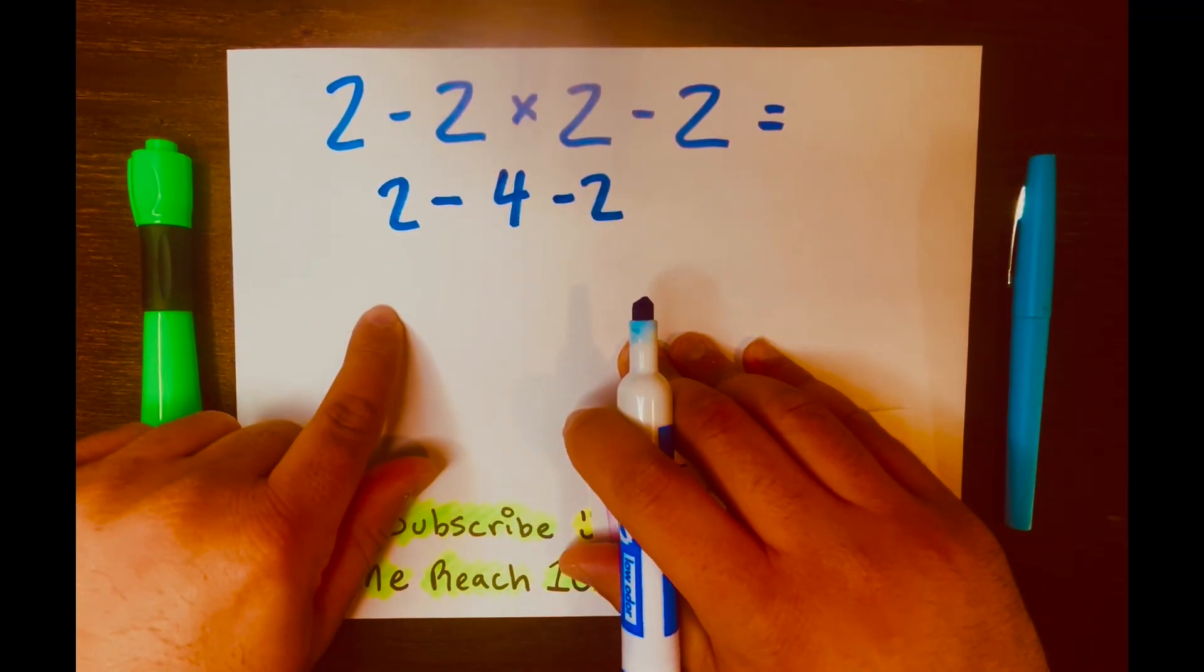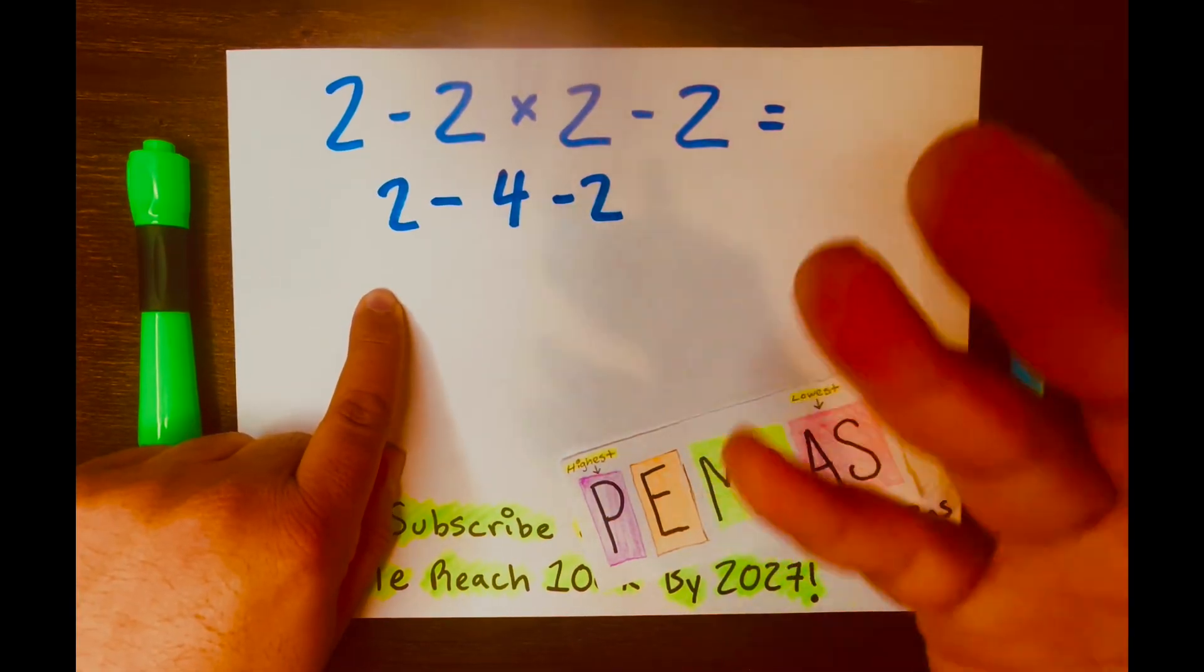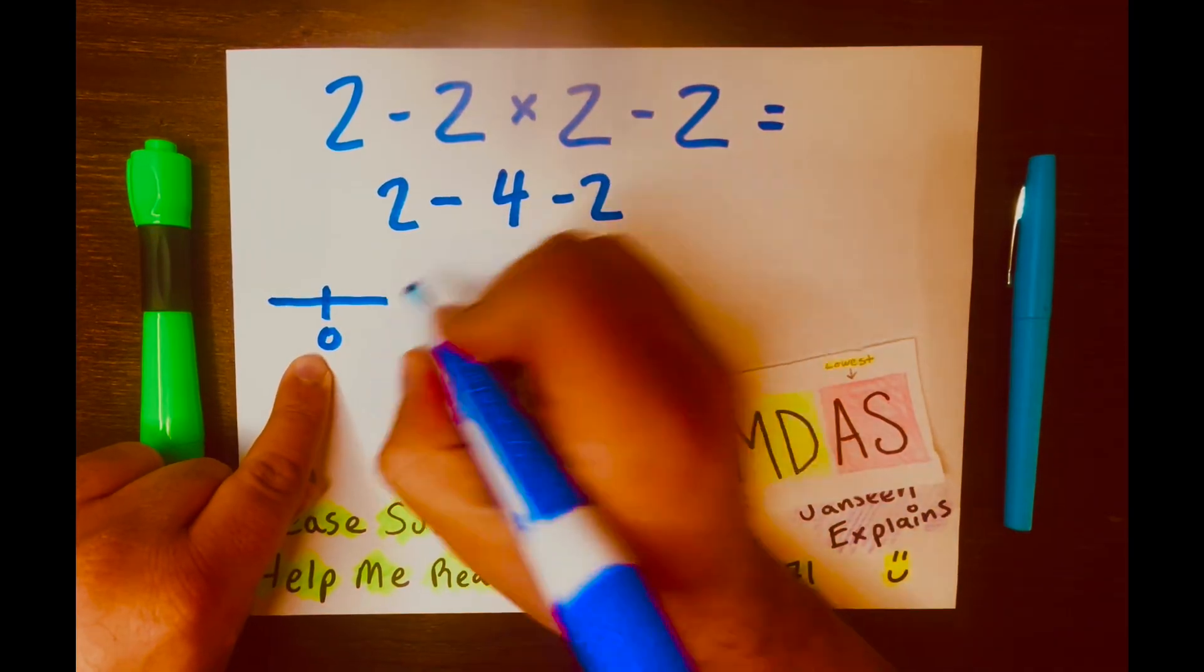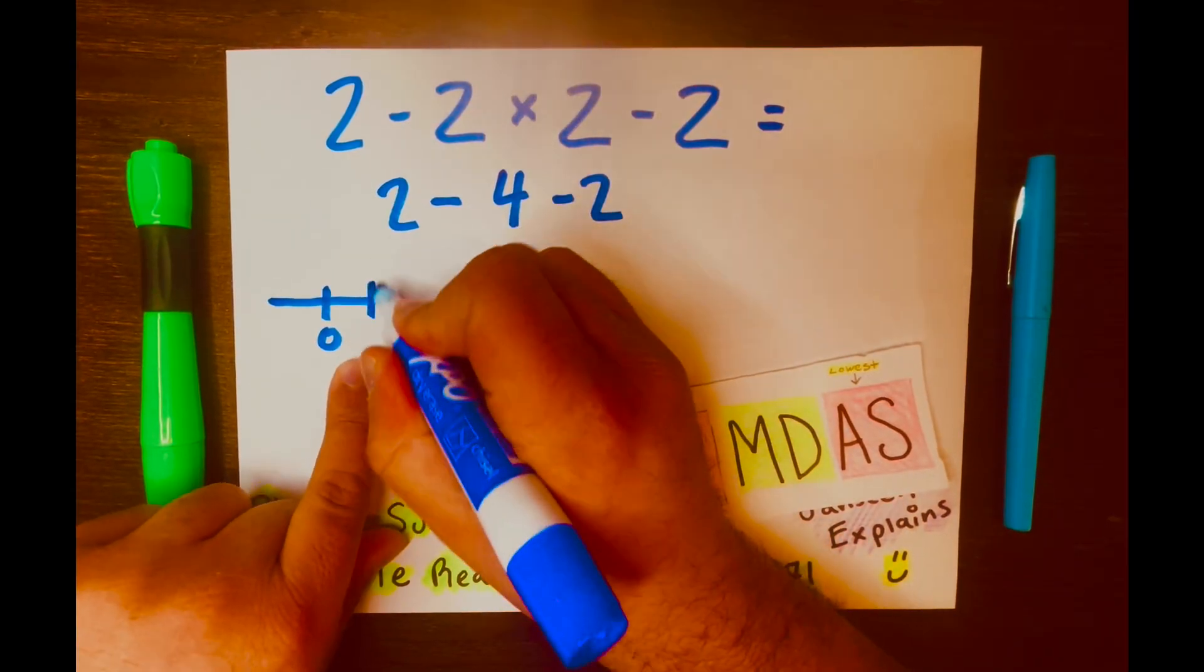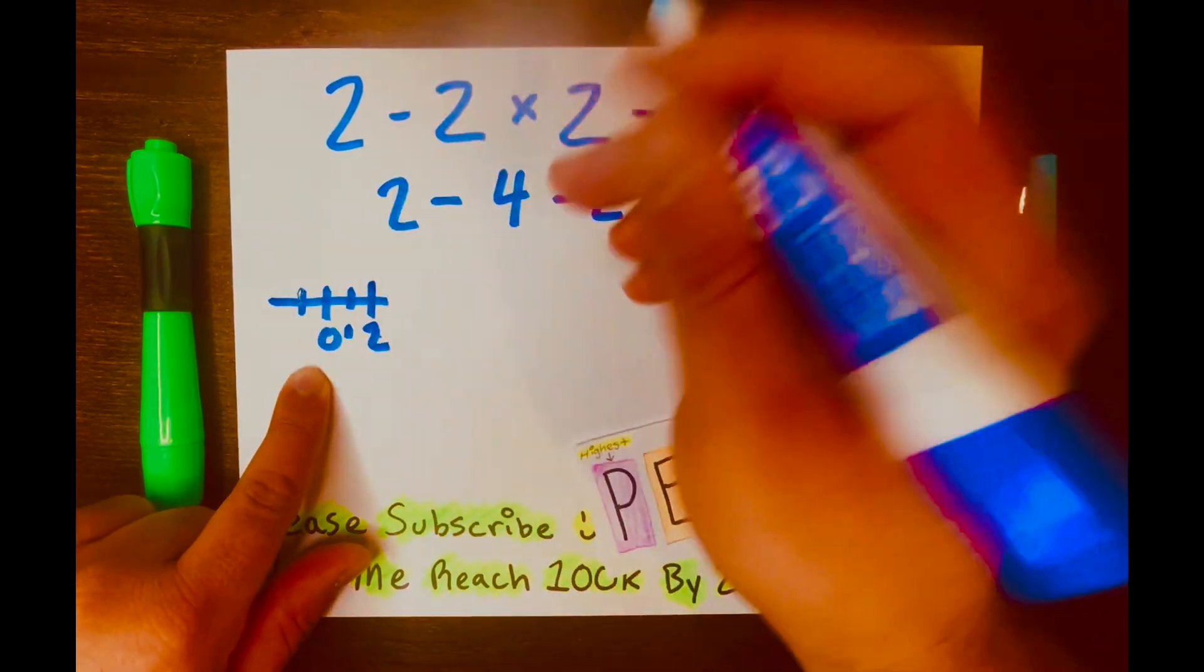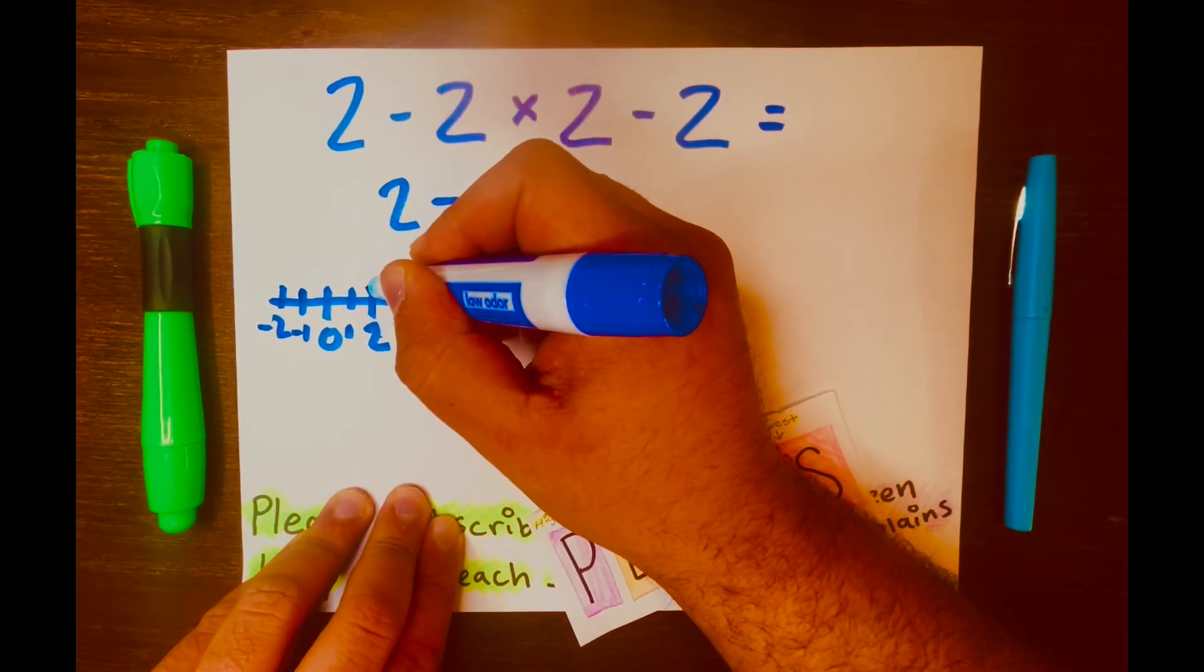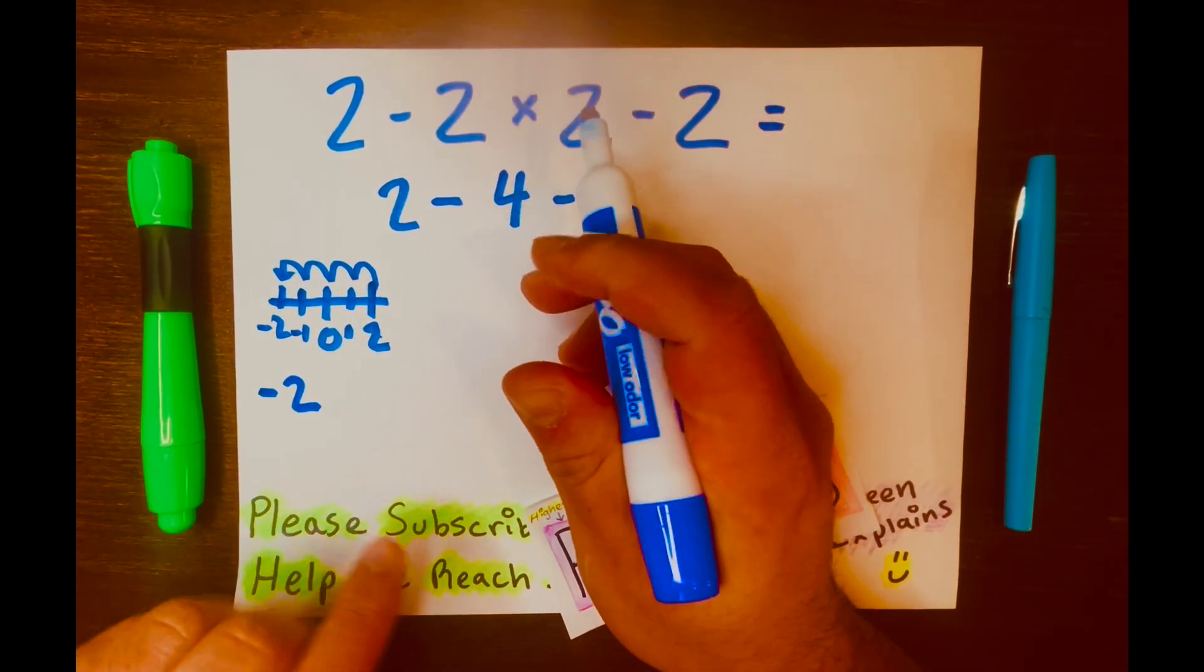2 minus 4 minus 2. Now, there are two ways to solve this. You can use the number line or you can use money scenario. So let's use the number line and write 0. We are solving this problem from left to right. So 2 minus 4, we'll start at 2 and move back 4 units to the left. So you'll land at negative 2. So 2 minus 4 equals negative 2.